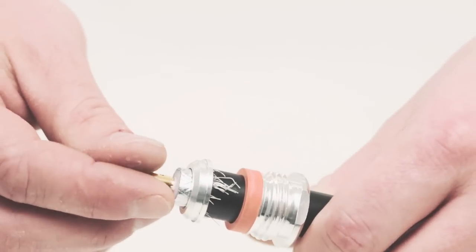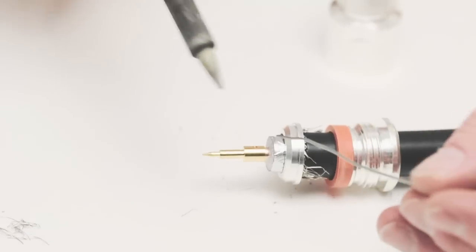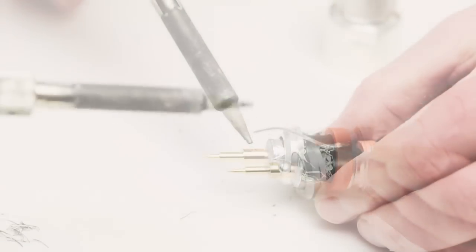Slide the remaining pieces onto the cable, including the pin. Using a soldering iron, solder the pin onto the center conductor.